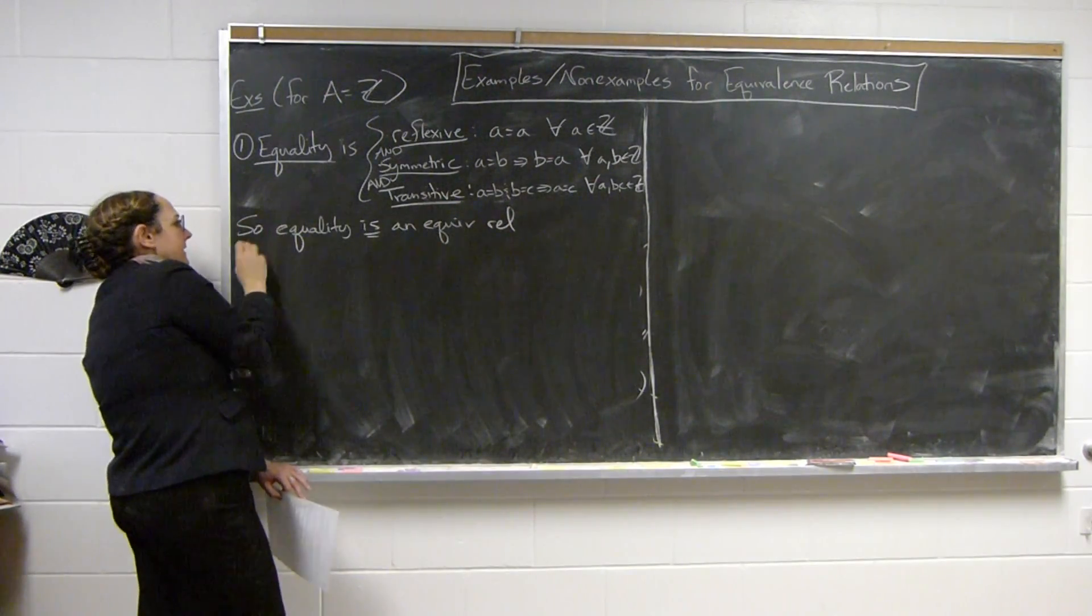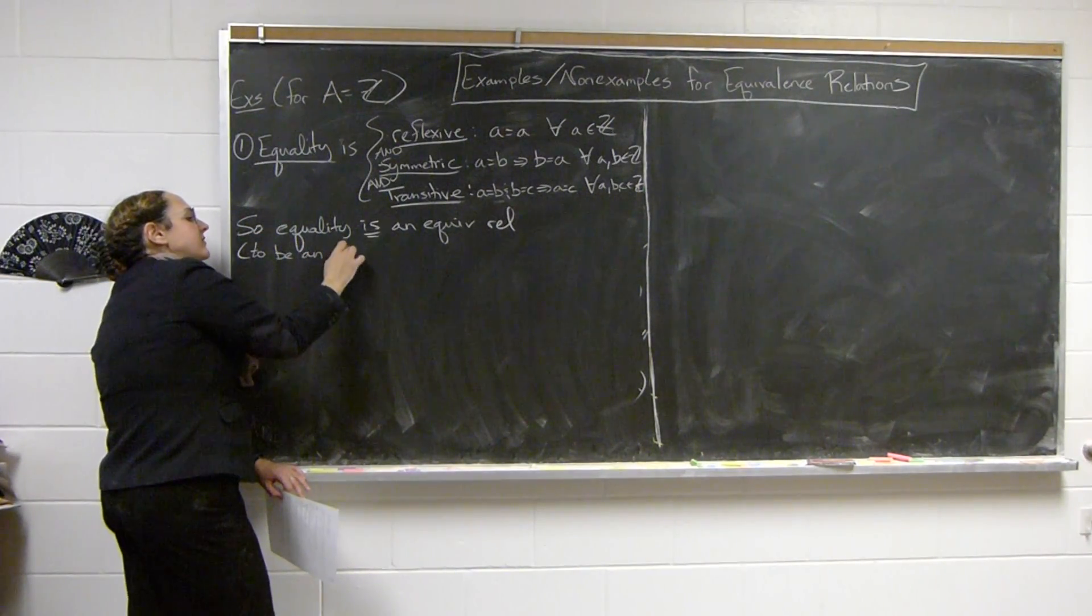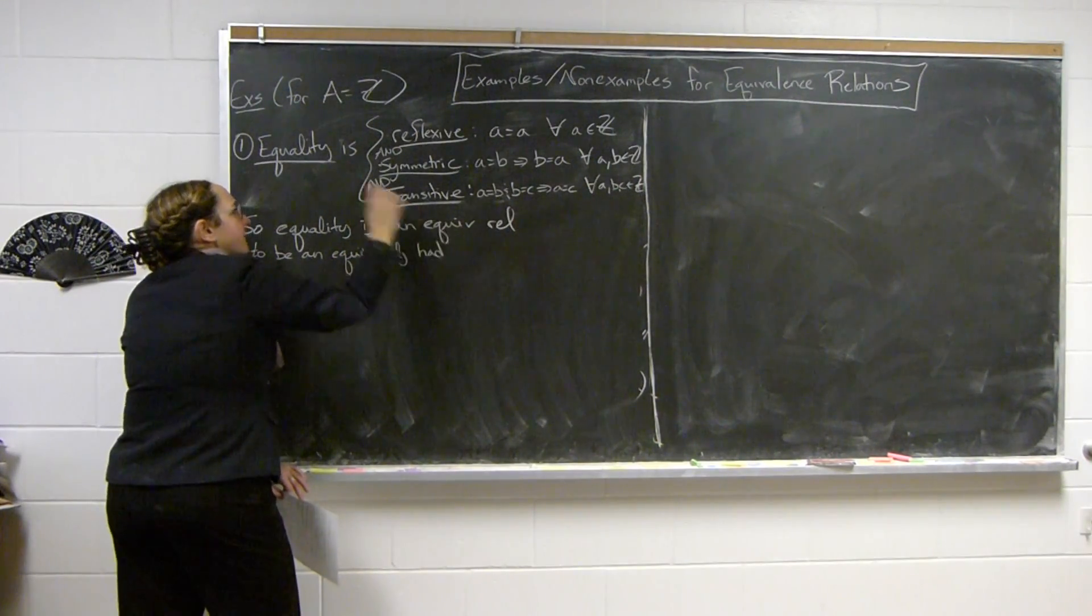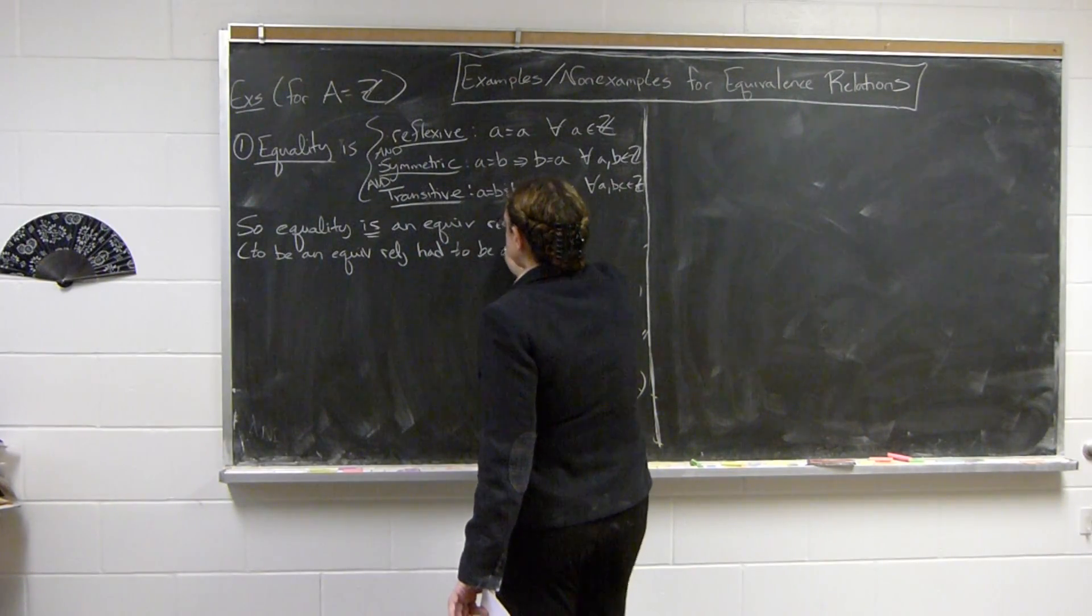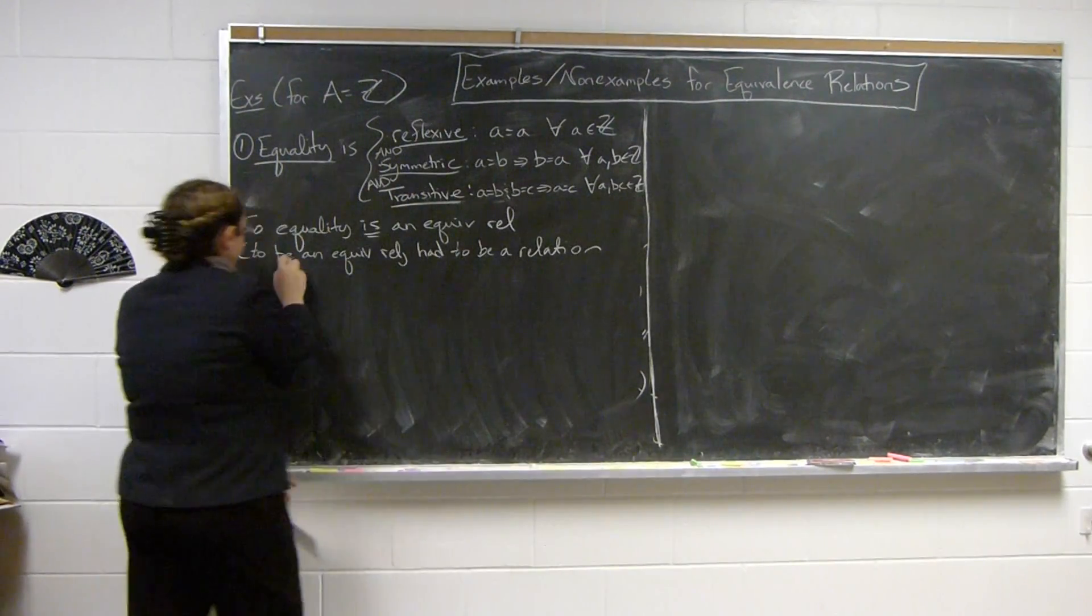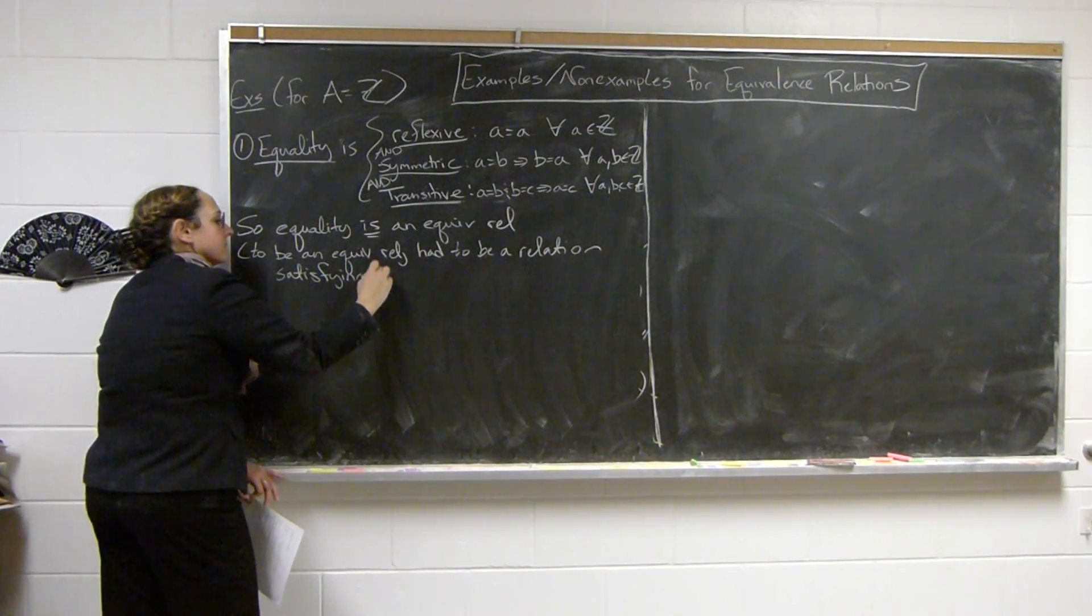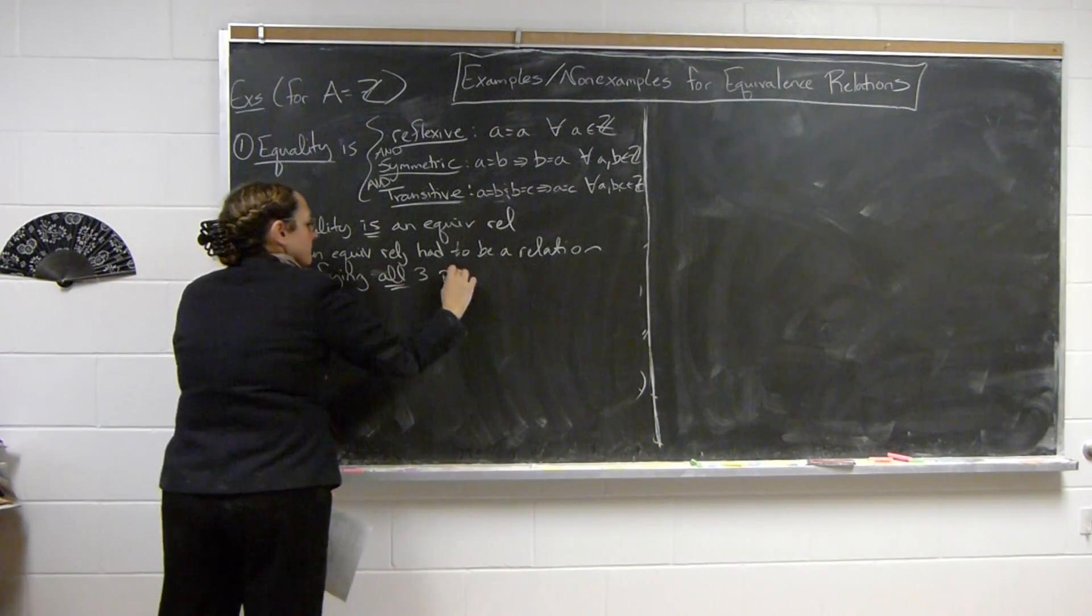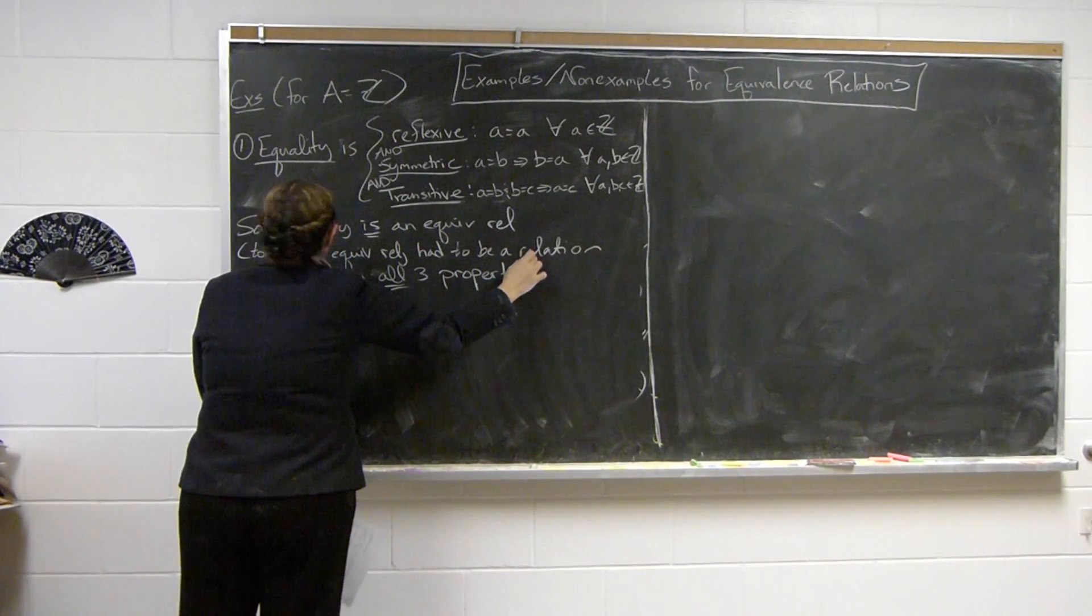And we emphasize to be an equivalence relation, it had to satisfy all three properties. It had to be a relation satisfying all three properties. And then in order to show that it's not an equivalence relation, we just need that one of those breaks down.